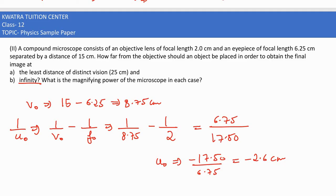The magnification depends on v₀ over u₀ times D over fₑ. v₀ is 8.75, u₀ is 2.6, with values of 25 and 6.05. Solving this value, the answer comes out to be 13.5.